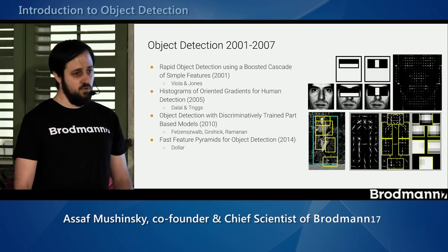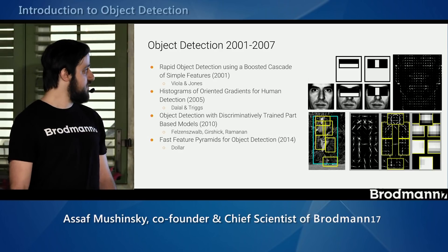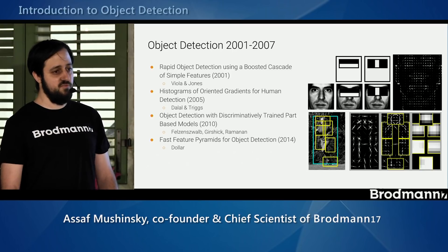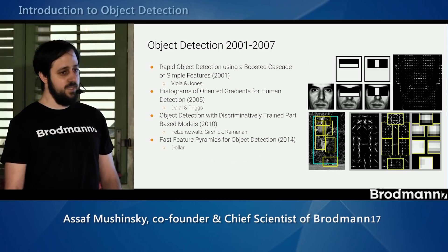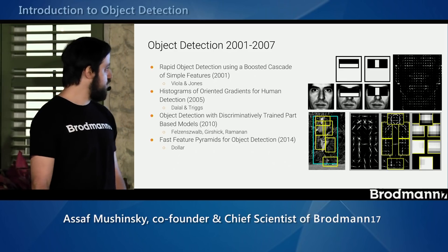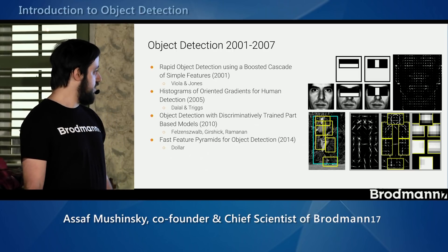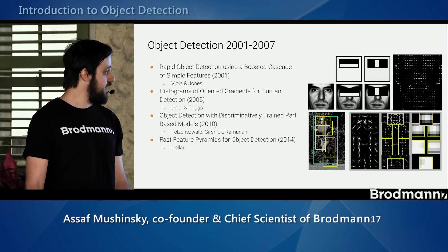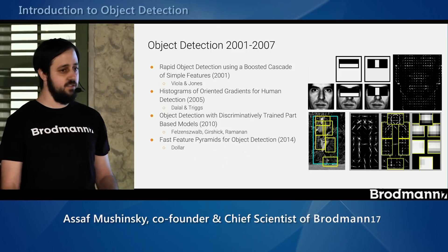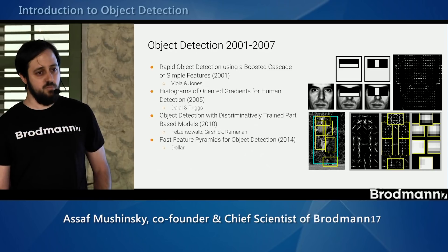From 2001 to 2007, there were classical computer vision methods. This started with Viola-Jones, which did very well for the easy task of frontal face detection by extracting low-level features and classifying them using boosting. The next step was better features — HOG by Triggs and Dalal in 2005 — which then improved in 2010 with DPM, a model that described shape better using moving parts, allowing detection of more deformable objects instead of just single template matching.